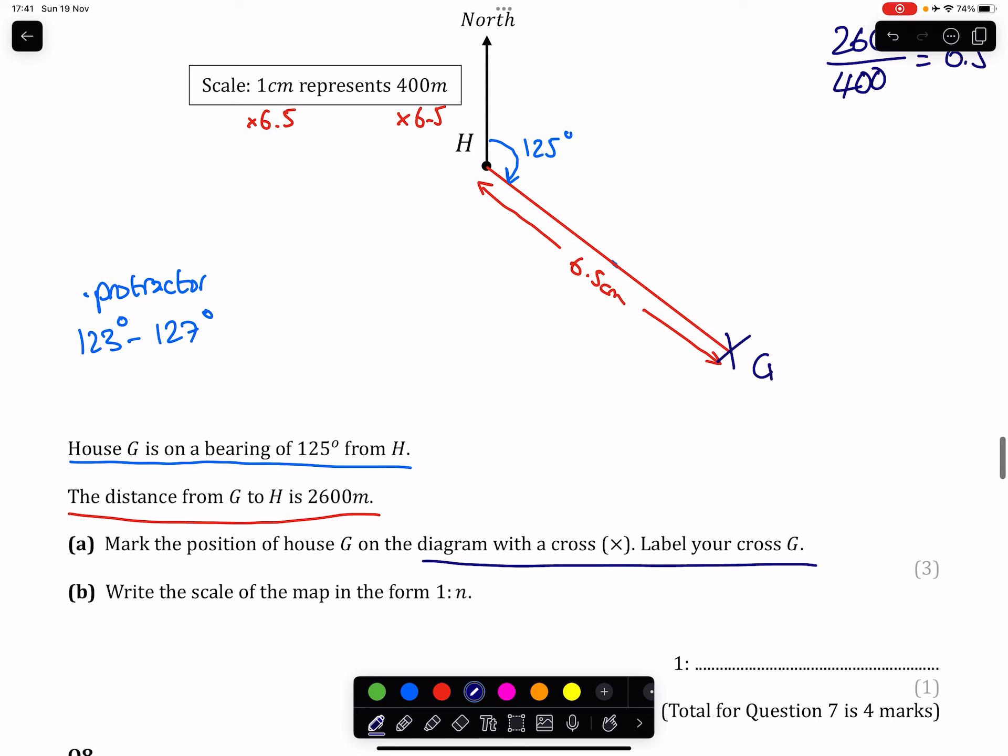Part B, write the scale of the map in the form 1 to N. So what this means is that our left-hand side needs to be a 1 and our right-hand side needs to be something, but the units have to be the same. So anyone that's put 1 to 400 down thinking it would be that easy would be making a mistake because that 400 is in metres.